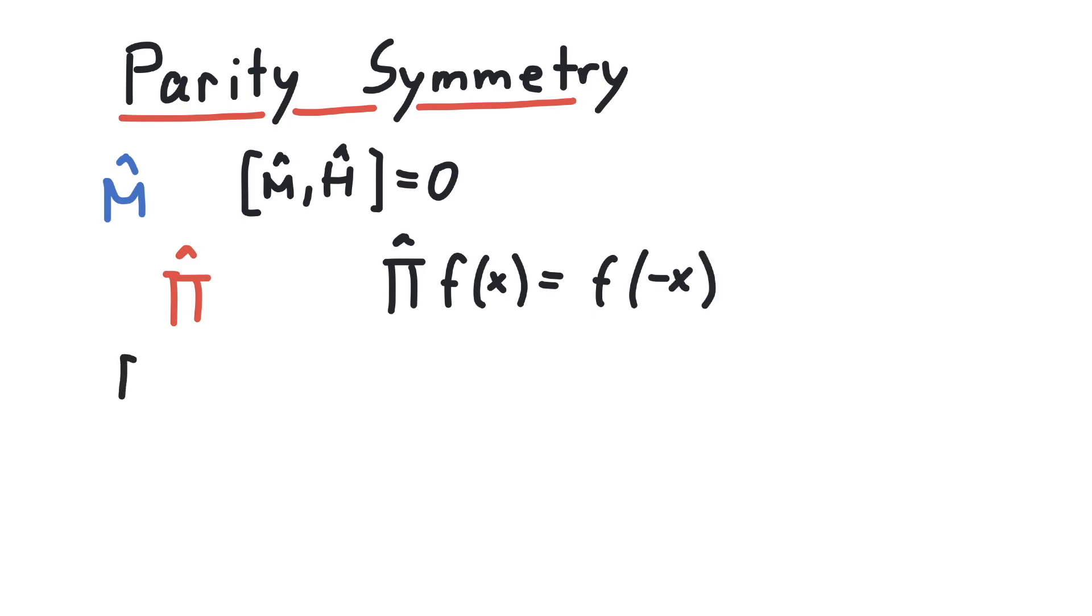So let's see whether the parity operator commutes with the Hamiltonian. We have a function here, actually a function f of x, so that the operators pi and the Hamiltonian can act on something. First, let's split up the Hamiltonian in its kinetic energy part and the potential energy.